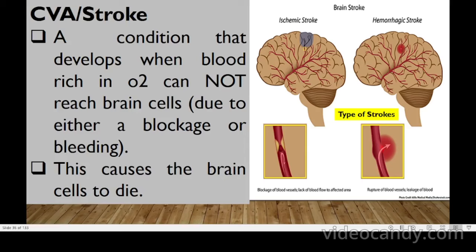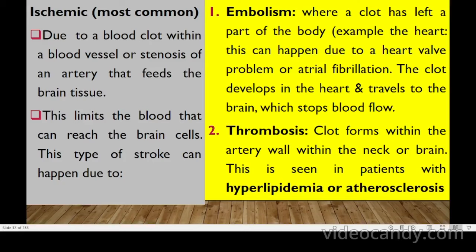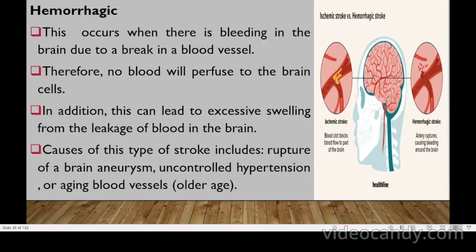CVA (stroke) occurs when oxygen-rich blood cannot reach brain cells due to blockage or bleeding, causing cells to die. There are two main types: ischemic (most common), caused by a blood clot or stenosis of an artery — due to embolism or thrombosis — and hemorrhagic, which occurs when there is bleeding in the brain from a break in a blood vessel, leading to loss of perfusion and excessive blood leakage.